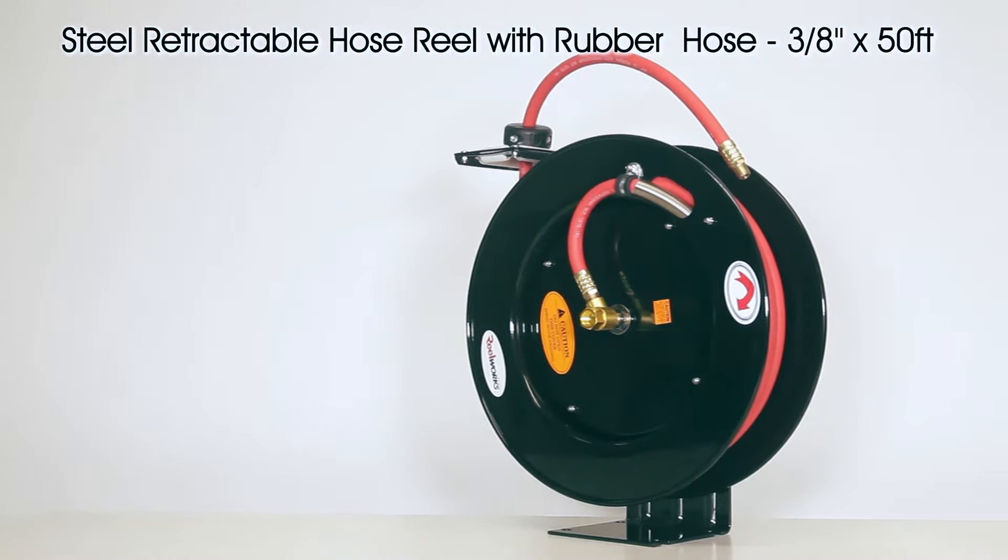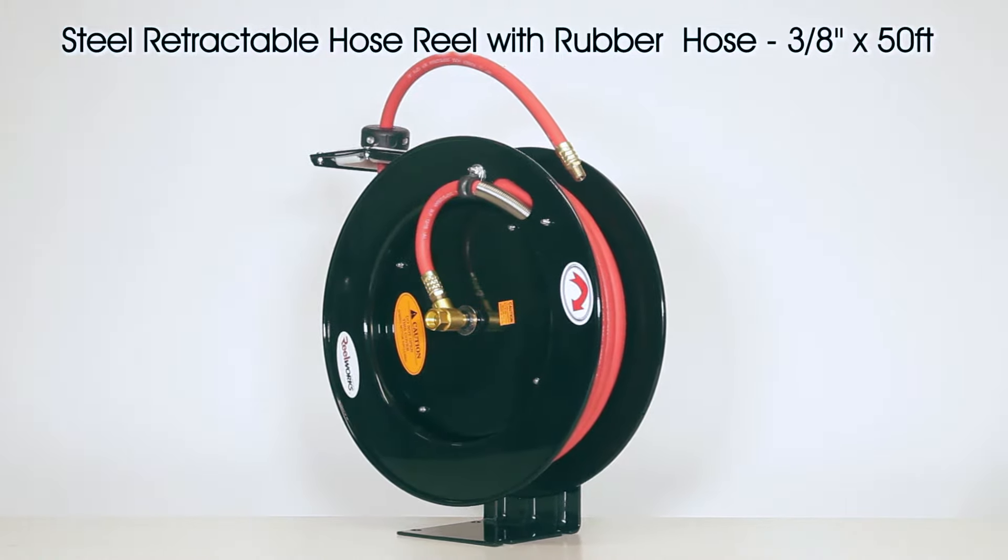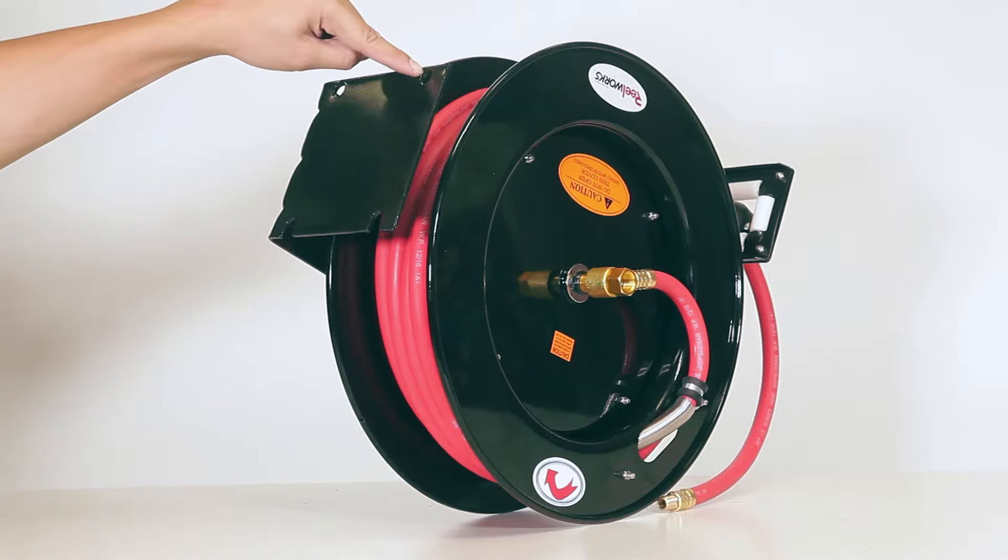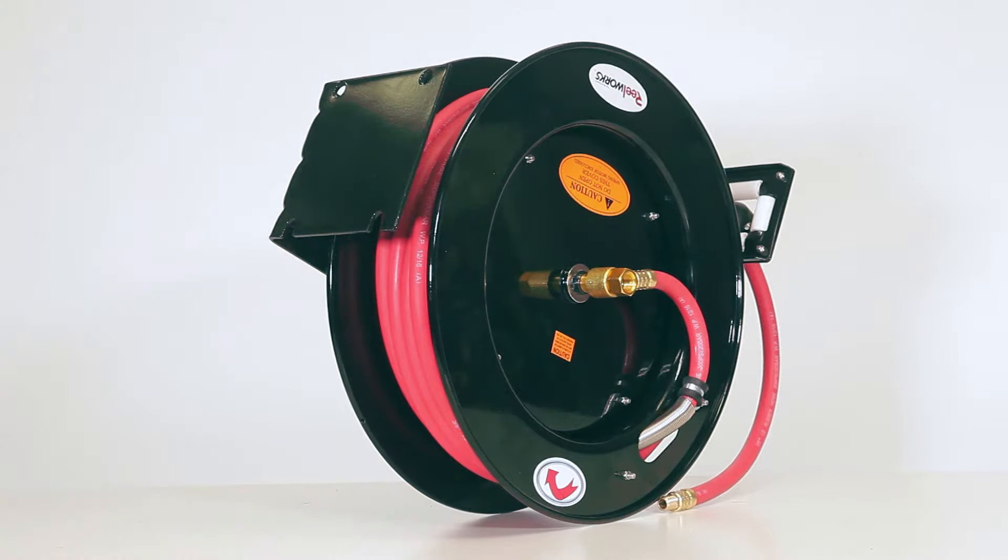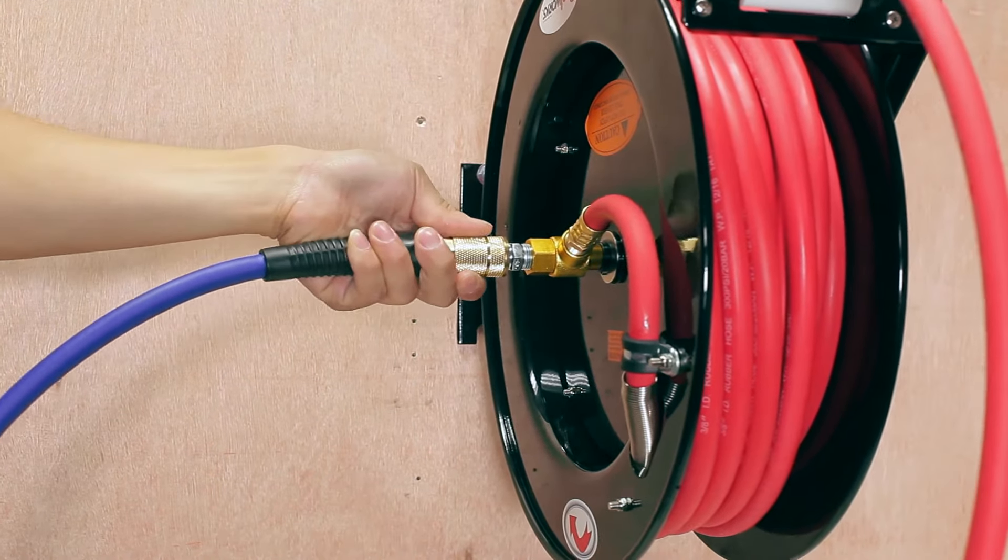This is a steel retractable hose reel with rubber hose, 3/8 inches by 50 feet. The reel base has mounting holes for mounting on a suitable flat surface. The end of the incoming hose can be connected to the desired supply source.